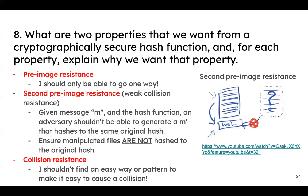With second pre-image resistance, I can't make up a completely different message, throw it into the same MD5 hash, and get the same output — because then you couldn't tell the two files apart. The question only asks for two of these three properties, so you can pick the first and third — pre-image resistance and collision resistance — since everyone knows collision resistance is how you 'break' a hash.